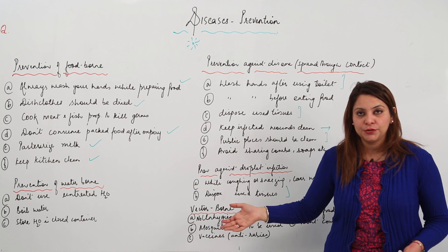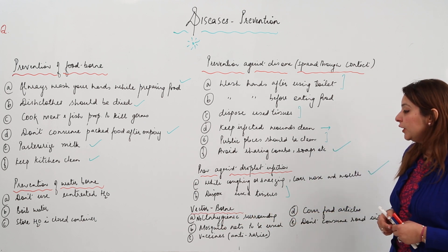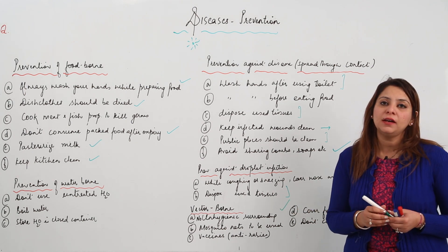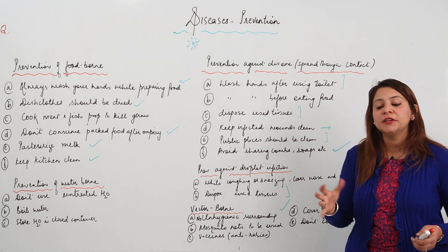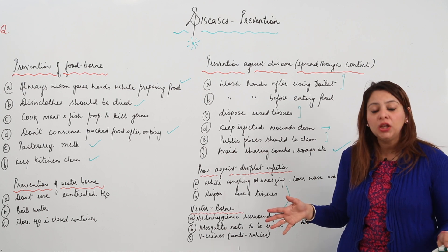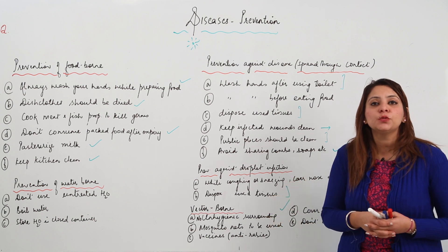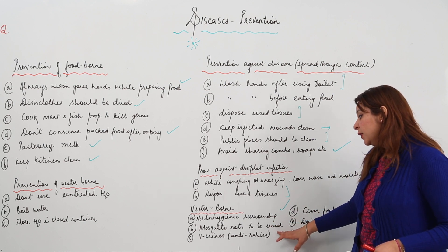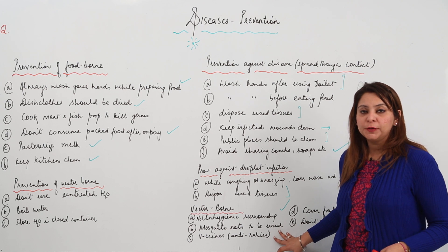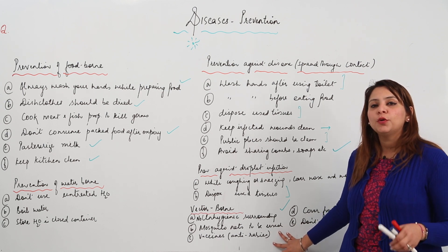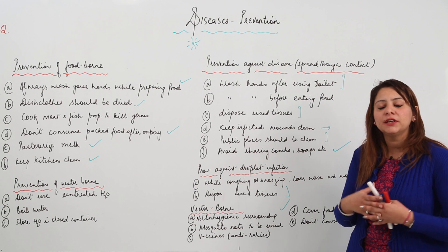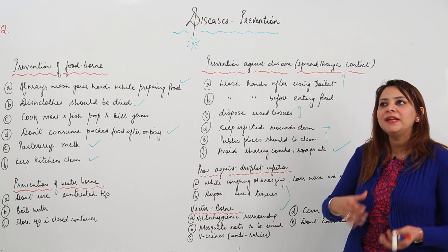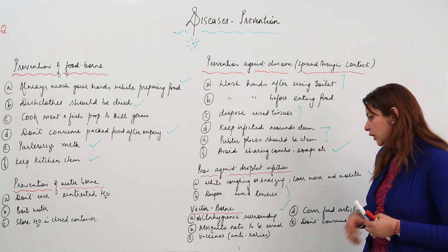To prevent vector-borne diseases, maintain hygienic surroundings. If surroundings are hygienic, there will be no mosquitoes, which are the main vectors that spread disease. Use mosquito nets, and use mosquito repellents like Odomos on your body so that you can prevent bites from mosquitoes.